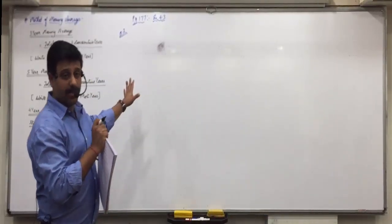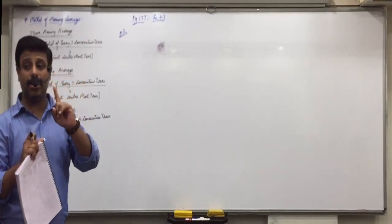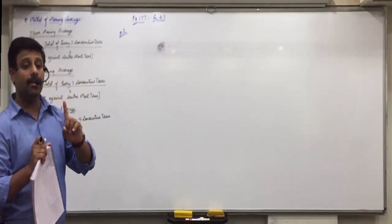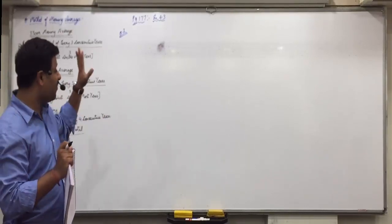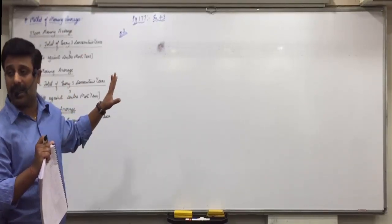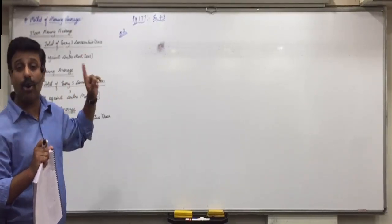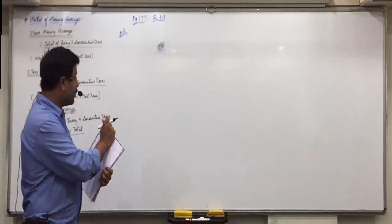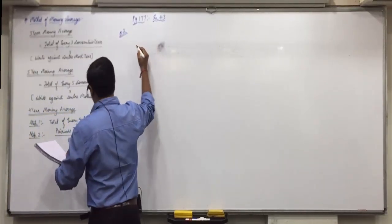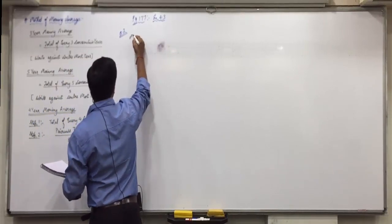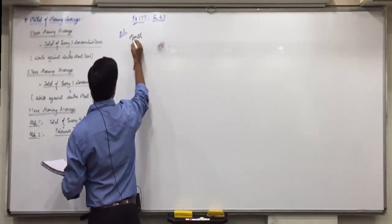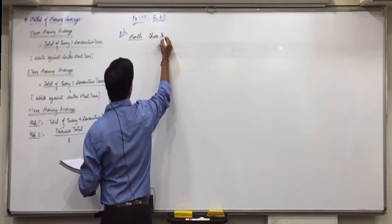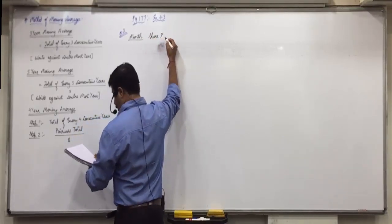Here when you write the values, write them leaving one line each, because you are not going to get the centermost value. So whenever you do a 4-yearly or monthly moving average, write all the values leaving one line each. The columns here will be: month, then share price in rupees, then T.